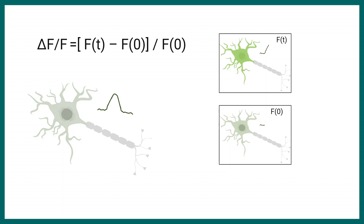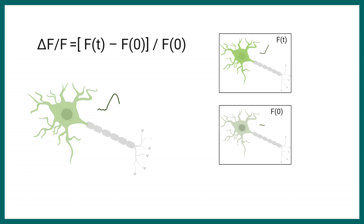The data obtained from GCaMP recording is generally analyzed by recording the ΔF/F value plotted over time. ΔF/F is the relative change of fluorescence over baseline fluorescence. ΔF is the fluorescence at time t minus fluorescence at time 0, and F0 is the baseline fluorescence. Ft is the fluorescence recorded at a particular time point.